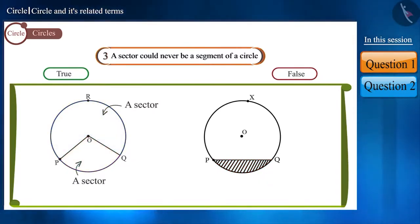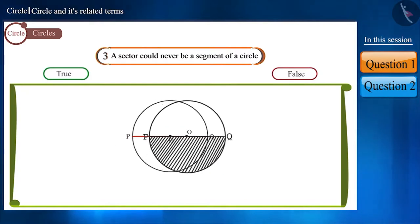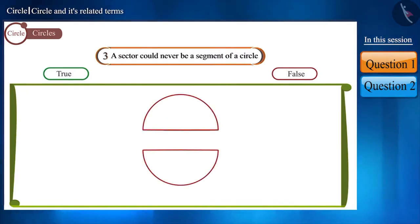Here, if we choose points P and Q such that line segment PQ is the diameter of this circle, then these two parts will be equal.